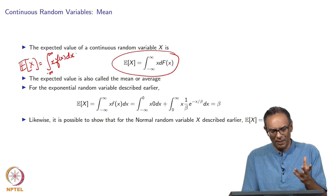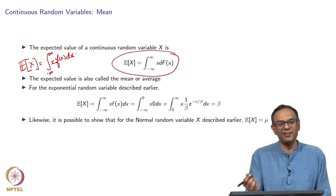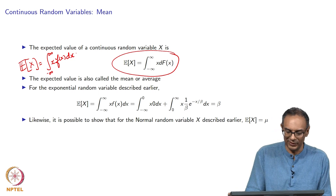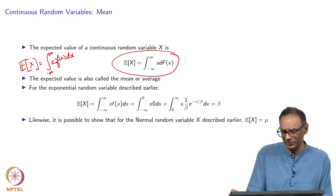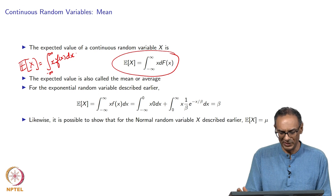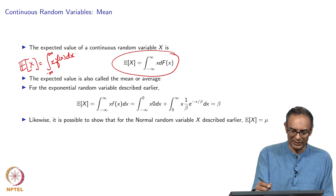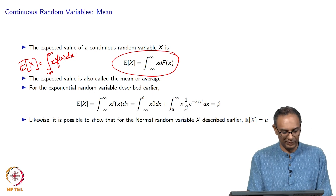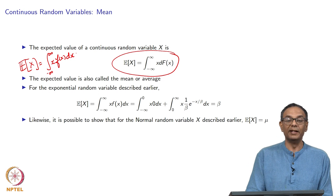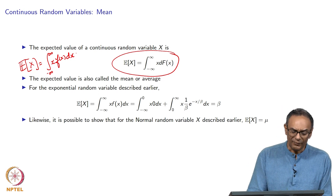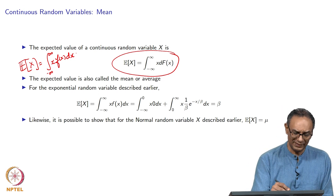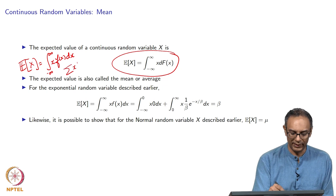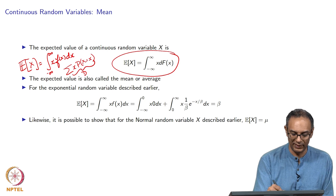I do not want to keep jumping between the pdf and the cdf. I tend to write everything in terms of the cdf because the rest of the course is probably going to be mostly cdf oriented, but these two are basically equivalent. That is how we define the expected value. Mathematically, this is very similar to the discrete case: summation of x times the probability of x equals little x.